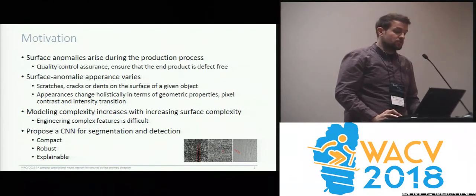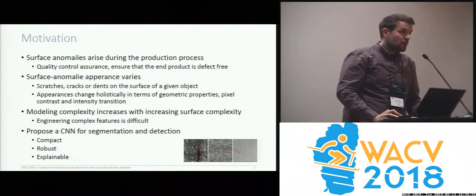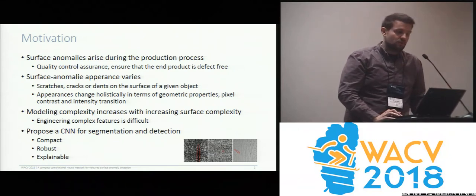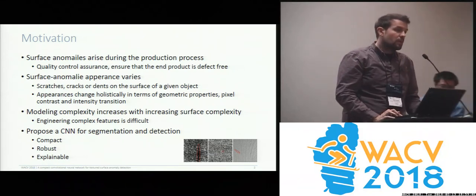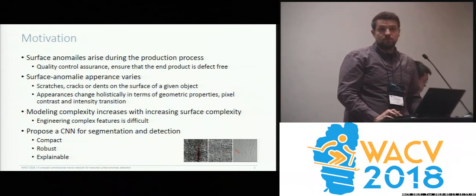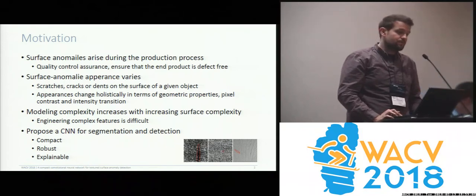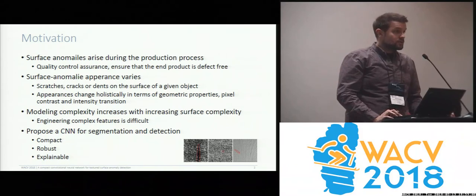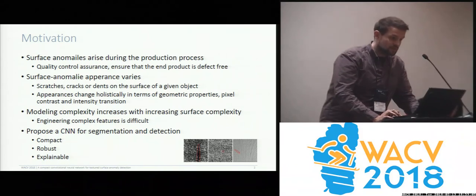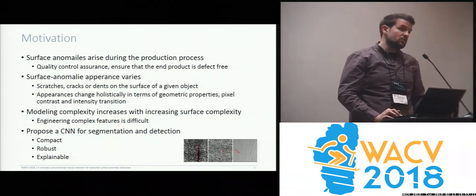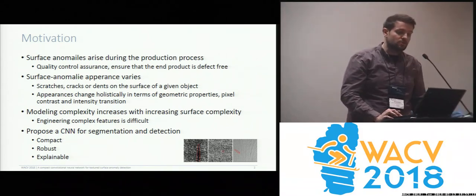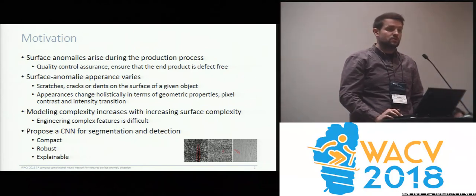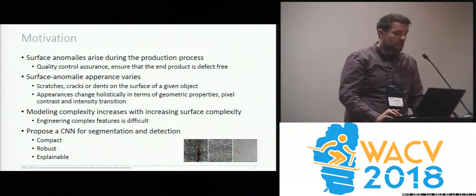Surface anomalies generally arise during the production process, and we would like to perform quality control assurance to ensure that end products are defect-free. Surface anomaly appearances generally vary — these arise from scratches, cracks, or dents in the surface of an object. As such, the appearance changes holistically in terms of geometric properties, pixel contrast, and intensity transitions.